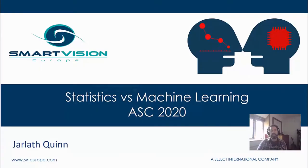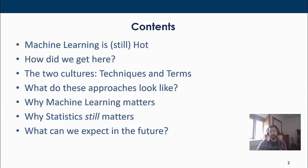Hello everybody, my name is Jarlith Quinn and I'm a consultant working for Smart Vision Europe. Two years ago I had the pleasure of making a presentation to the ASC on the topic of machine learning versus statistics, and today I'm reprising an updated version of that presentation. I'm going to talk about why machine learning is still a very hot topic, explore the historical context behind its rise, contrast that with the evolution of statistics as a discipline, and show how they differ — not just in philosophy but in what an analyst actually sees. I'll finish up explaining why machine learning matters and why statistics still matters, before speculating on what the future holds.